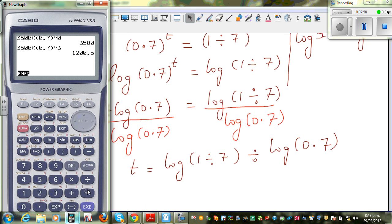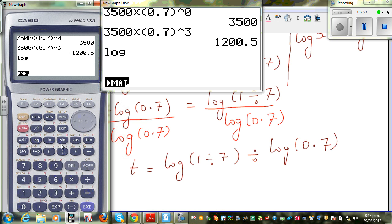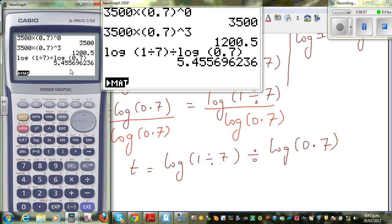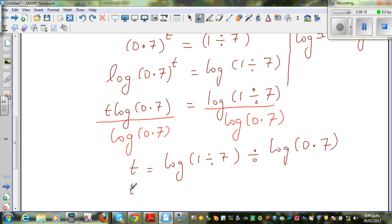So again, let me get the calculator out. So this is log bracket 1 divided by 7 divided by log 0.7. I'll put that in the bracket, 0.7. Which is 5.46. So exactly in 2 decimal places, it's 5.46.